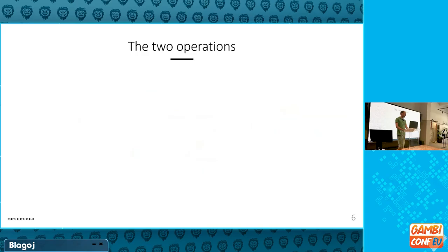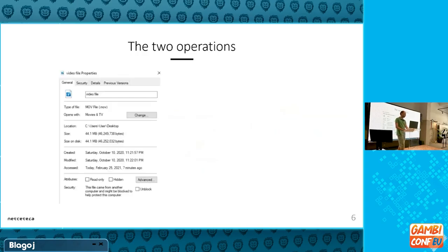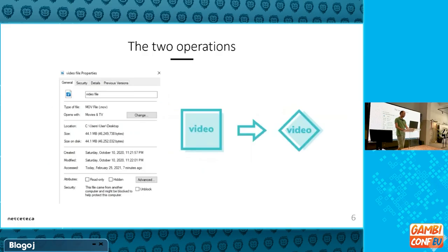We needed two kinds of operations. Once you run a file, first you need to determine whether we are able to transcode it — this is the process of extracting metadata. We need to detect how many cameras are in the video, what is the starting time, the names of the cameras, the extension, the type, the codec. The second operation is to do the actual transcoding if possible — converting from one video format to H.264.